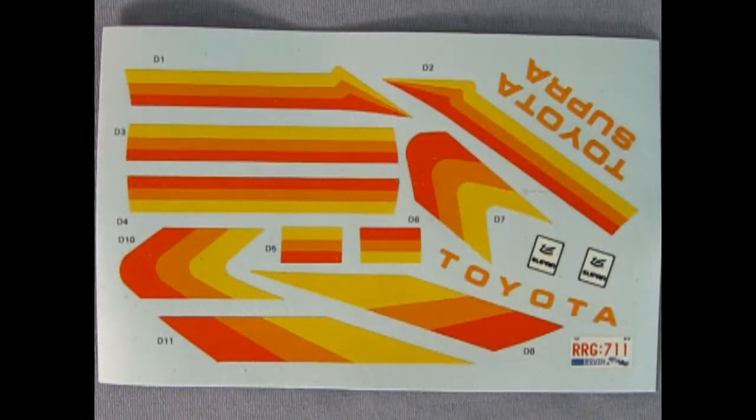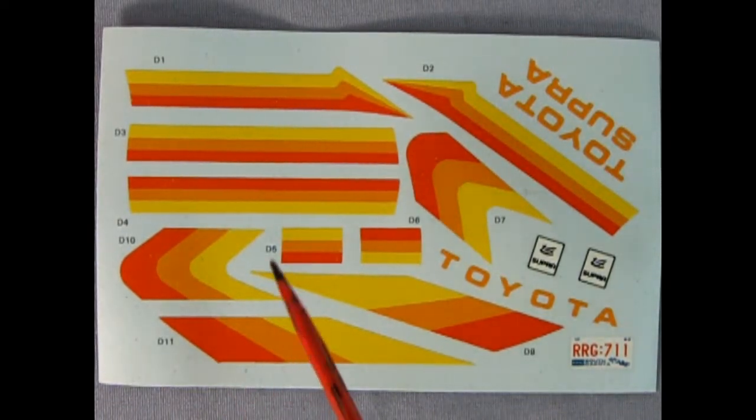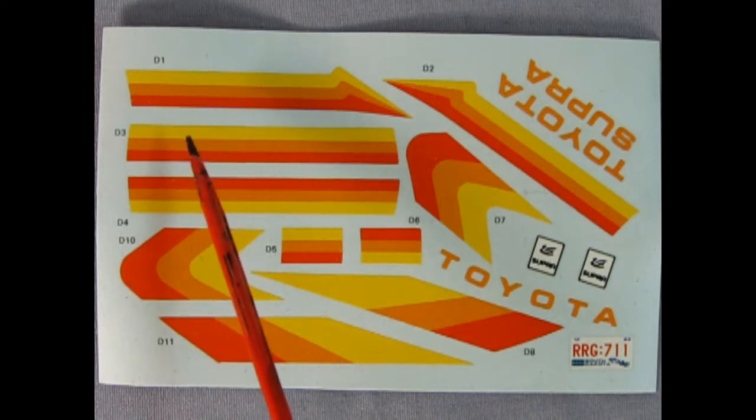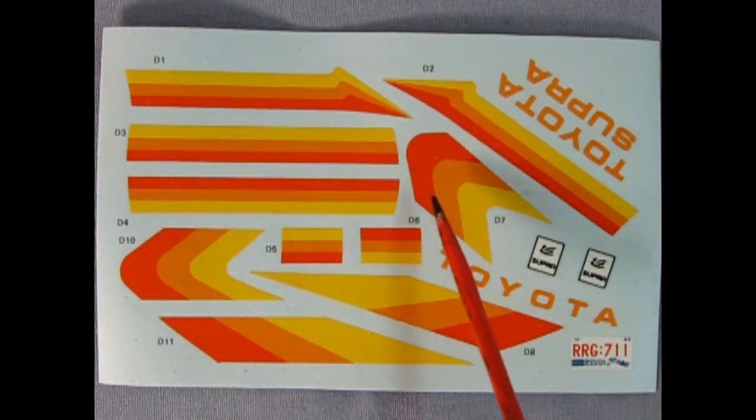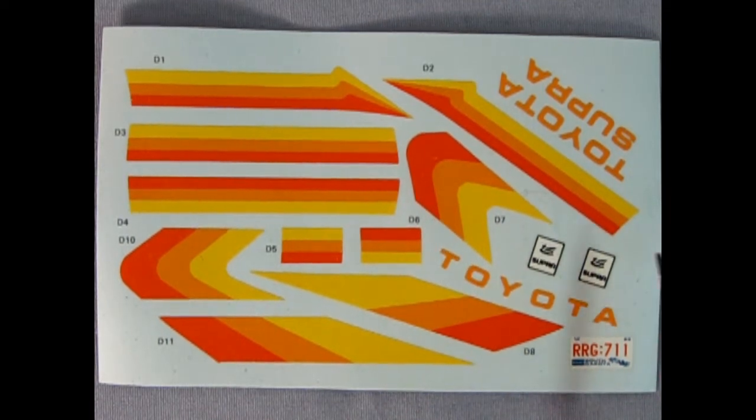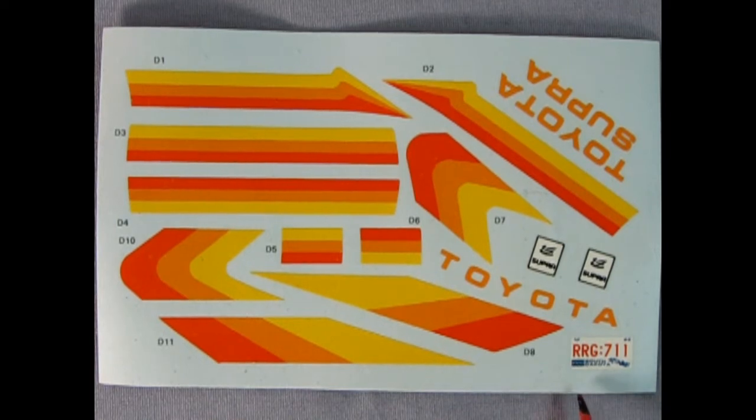So now I'm back again to show you the decal sheet. And man, this is right out of the 80s. Take a look at the colors on here. This is sort of a sunburst type pattern. You got yellow, orange, and then red. It would look pretty cool if you painted the car black actually. And here we've got a plate you don't see too often. This is a South Dakota license plate, RRG 711, and it even has the 1983 registry on here. So that's pretty cool to get an authentic plate. And then you also get these nice little Supras with the dragon on there.